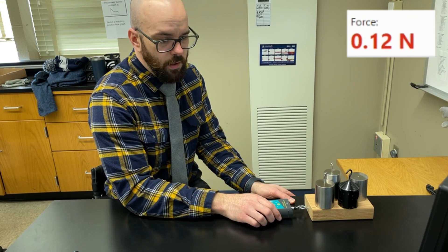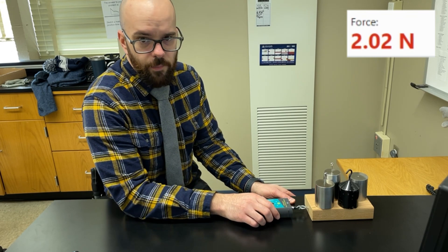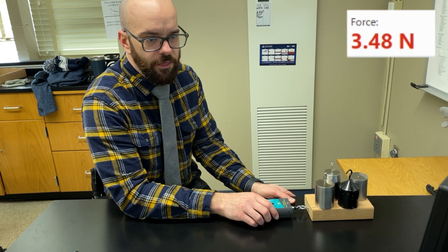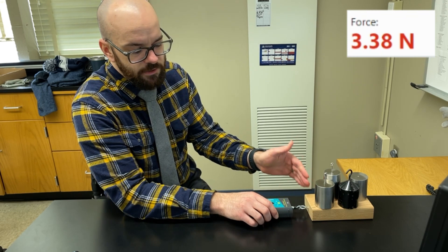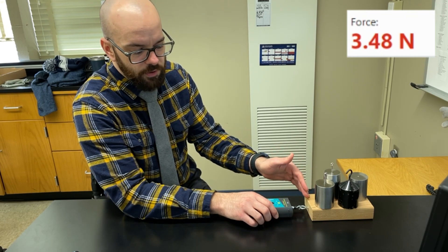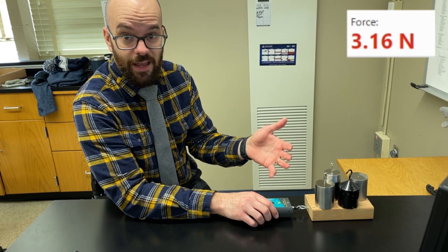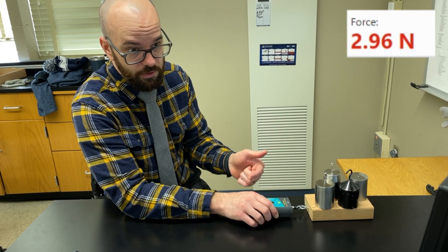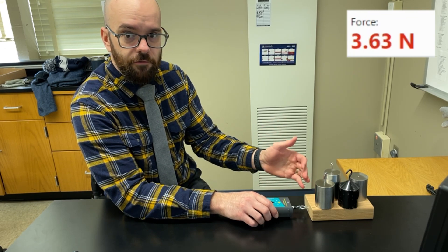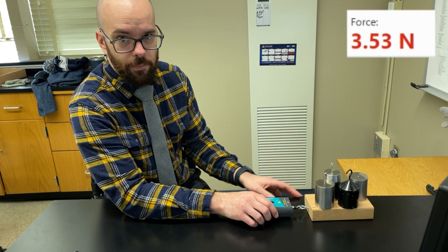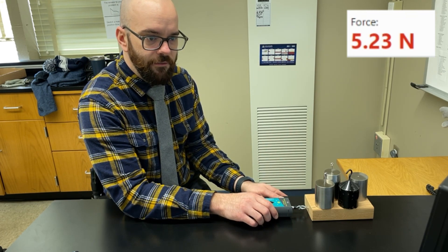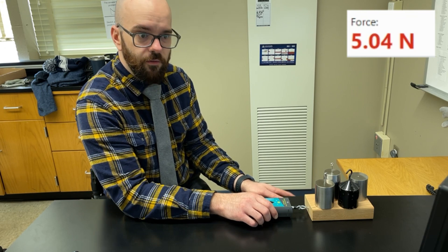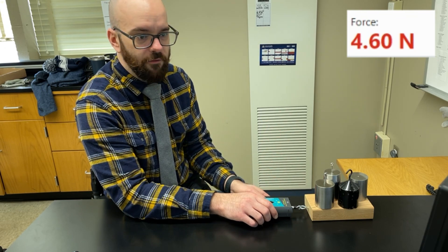So I'm attaching the sensor to the block, and let me pull on the block with about three newtons of force. There's a resistive friction force that the block is experiencing, which is matching that exactly. So if I pull with three newtons of force, there's three newtons of friction resisting my pull. I'm pulling with about five newtons of force now, and there's about five newtons of friction force preventing the block from sliding.